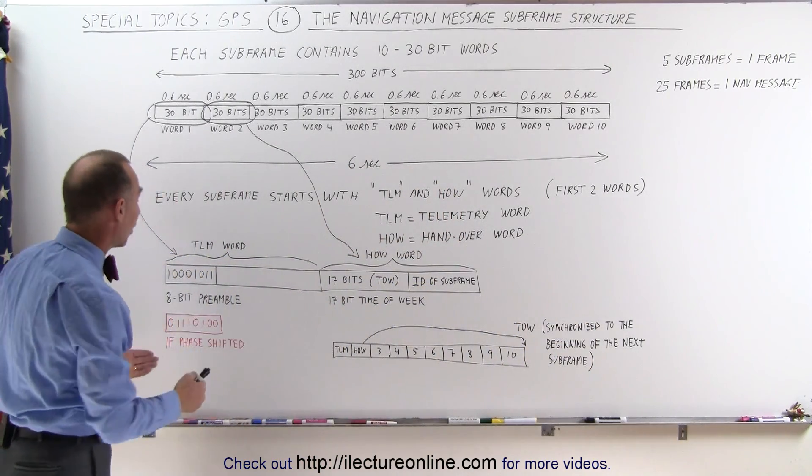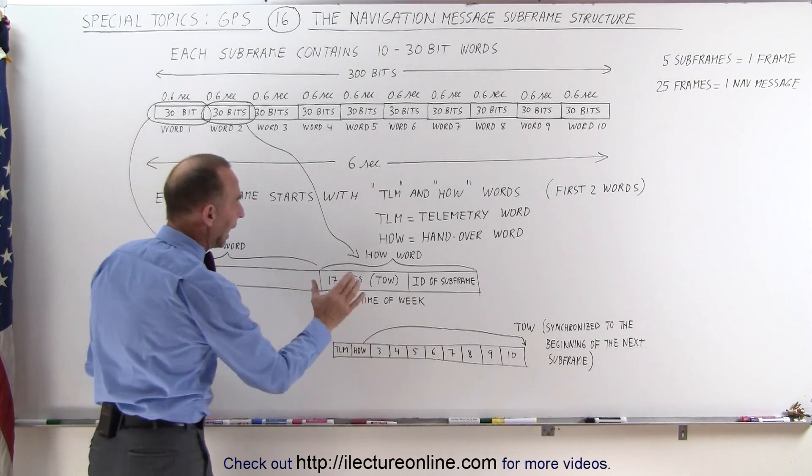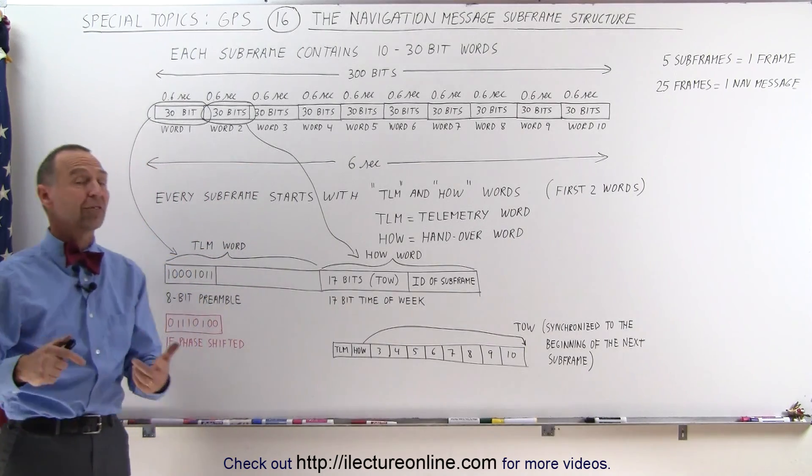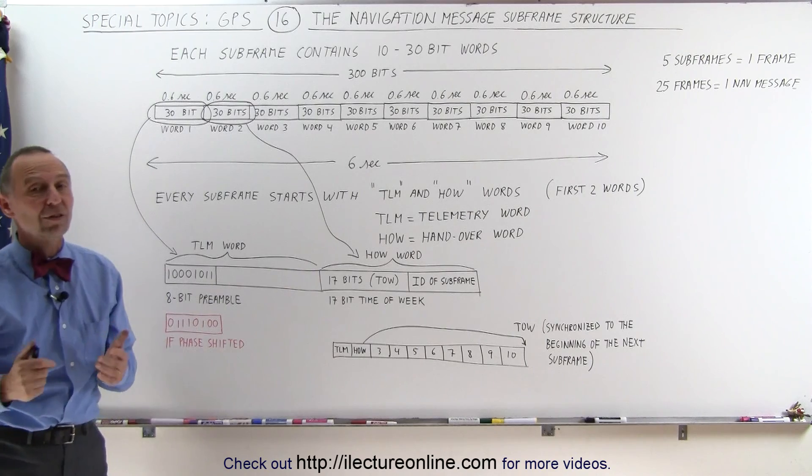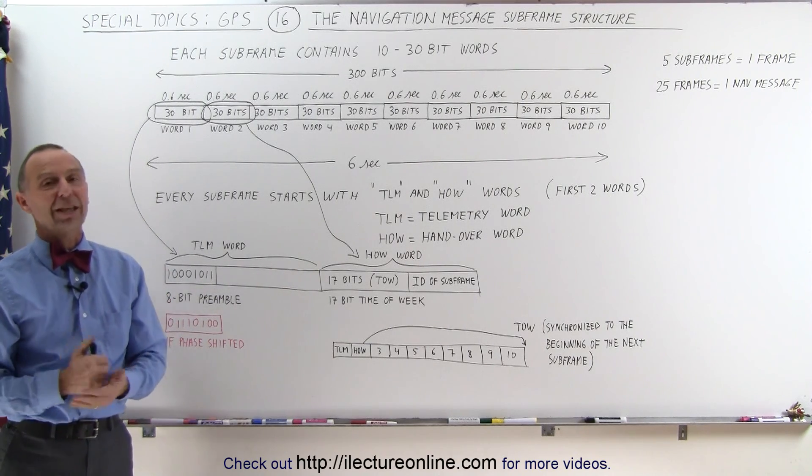Every subframe starts with those two words, the 8-bit preamble in the first word, and the 17-bit time of the week in the second word. In the next video, we'll take a closer look at the other contents within each of the subframes, so we can understand what's actually included in the navigation message.